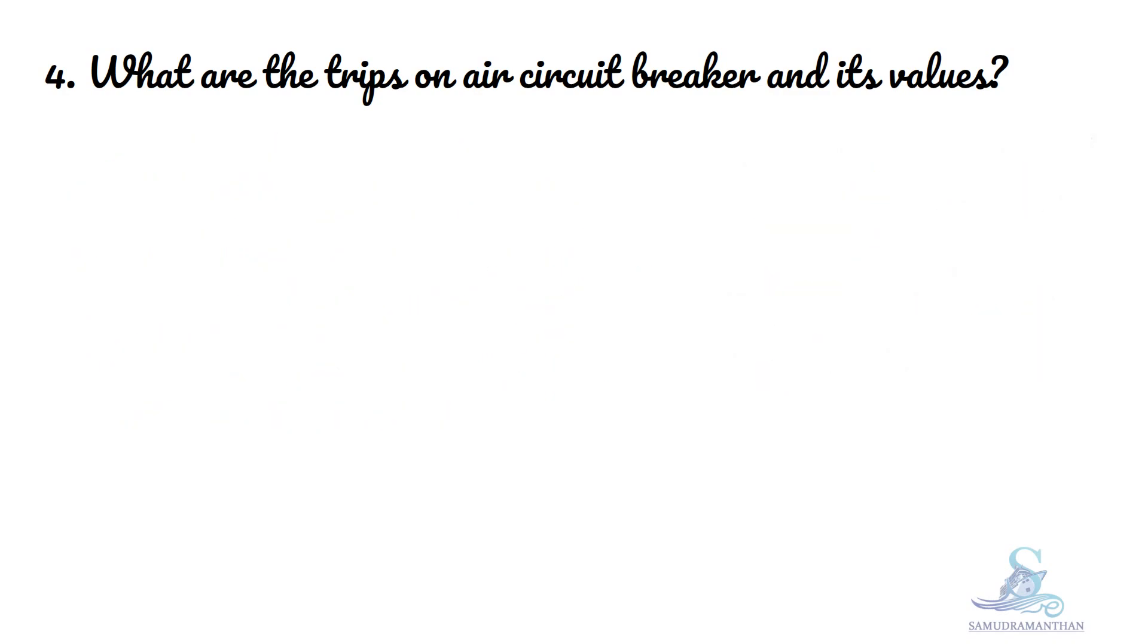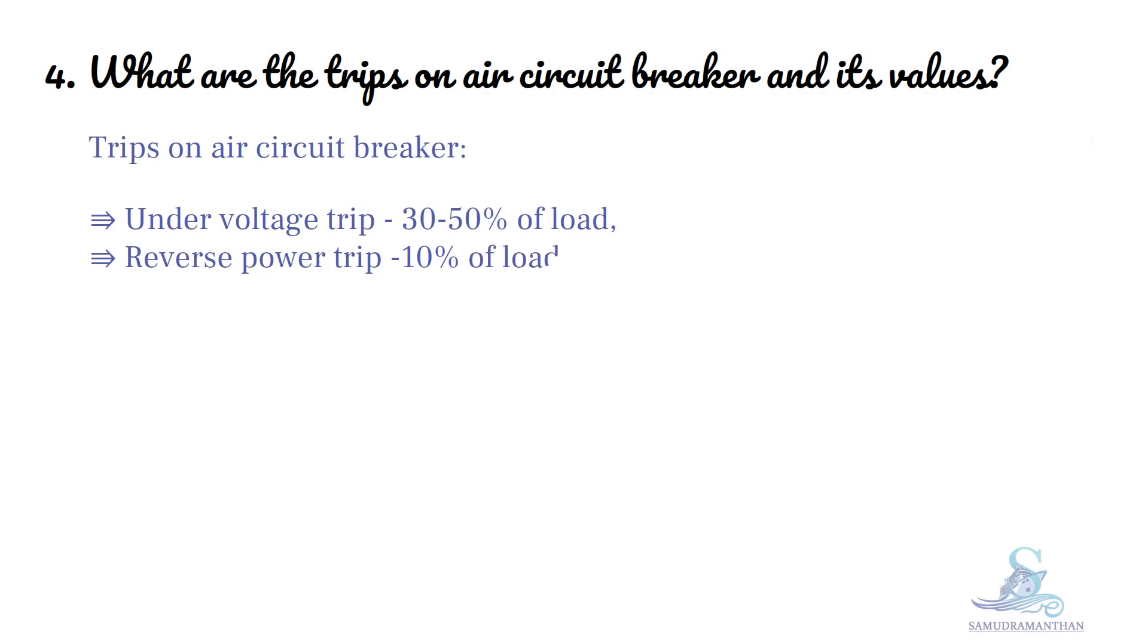Now let us discuss the different types of trips on an air circuit breaker. Under voltage trip: 30-50% of load. Reverse power trip: 10% of load. Short circuit trip. Over current trip: 150% of full load current.